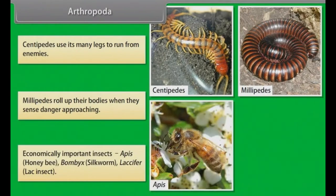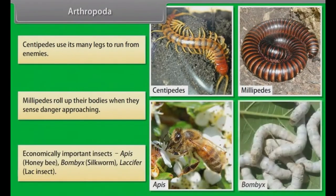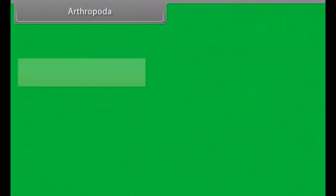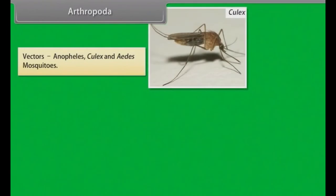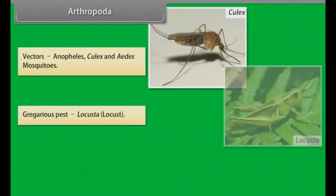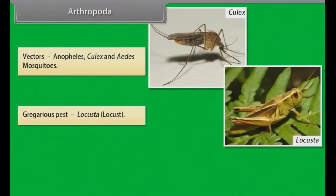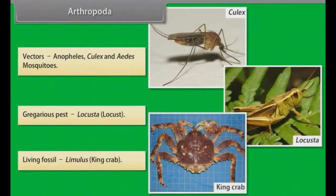Apis, that is honeybee; Bombyx, that is silkworm; and Laccifer, that is lac insect. Vectors: Anopheles, Culex and Aedes mosquitoes. Gregarious pest: Locusta, that is locust. Living fossil: Limulus, or king crab.